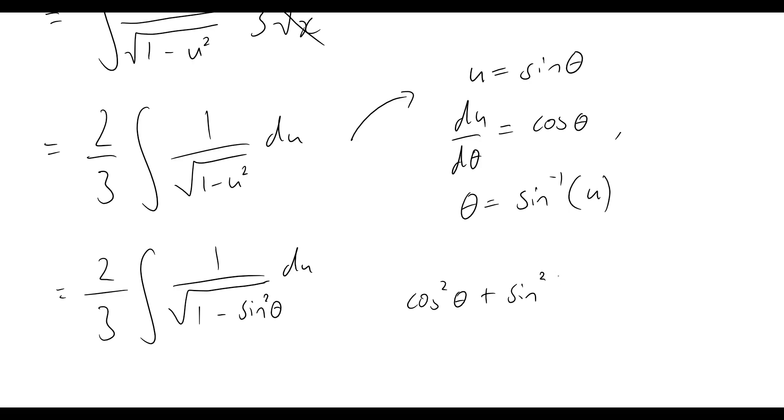And 1 minus sine squared theta goes back to our very famous trigonometric identity of cos squared theta plus sine squared theta equals 1. So if I subtracted sine squared theta across both sides, we get cos squared theta equals 1 minus sine squared theta, and that's exactly what we see here.